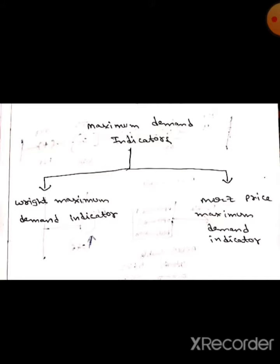Here in the maximum demand indicators, there are two types: one is rate maximum demand indicator and another one is Merz price maximum demand indicator. Let's talk about rate maximum demand indicator. Here in the rate maximum demand indicator, it indicates the maximum current flowing in the consumer's premise irrespective of voltage and power factor.